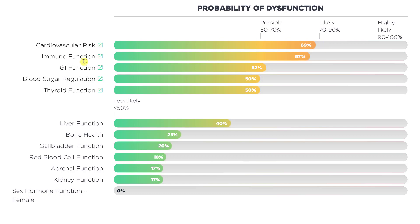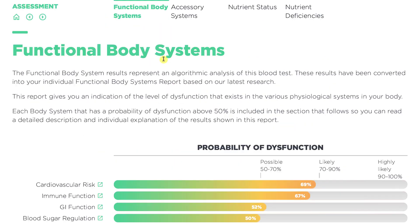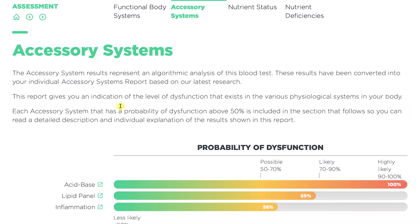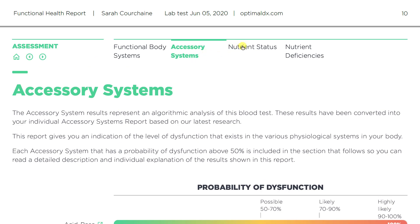Cardiovascular risk is at 69% dysfunction. Immune function is at 67% — 80% of our immune system lives within the gastrointestinal system, so it makes sense that digestive issues would impact immunity. GI function is at 52%, blood sugar dysregulation at 50%, and thyroid function at 50%. Your acid-base chemistry is off, you have nutritional deficiencies consistent with pH imbalance, your lipids are elevated, and there are many signs of high inflammation in the body — likely stemming from your digestive system.